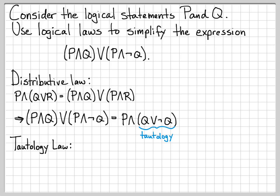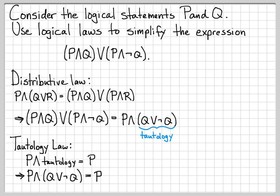We can apply the tautology law to further simplify. The tautology law says that any logical statement anded with a tautology is exactly equal to just the logical statement. We have P anded with a tautology, so that simplifies to just P. That is our final answer — we've simplified the original logical expression down to just P, which is obviously much simpler.